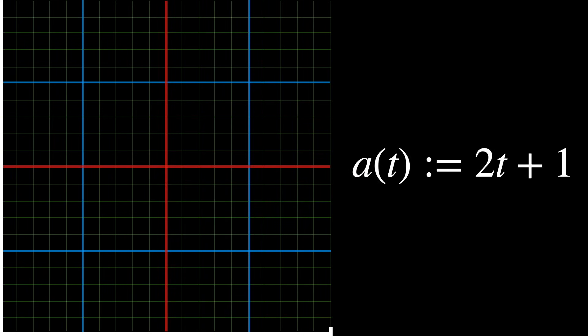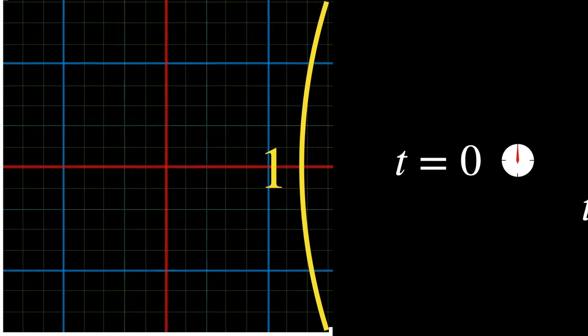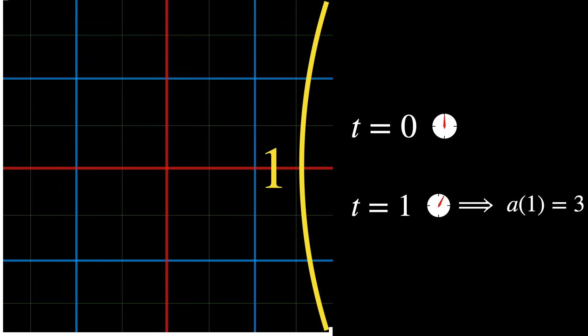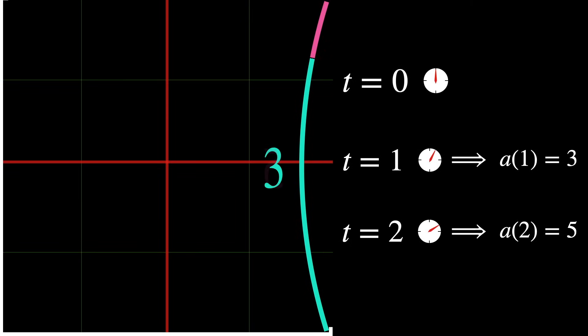In order to make the example more concrete, let's define a linear scale factor explicitly. This means that at time t equals 0, the square has side length 1. At time t equals 1, A of 1 is 3. So, all distances are tripled. At t equals 2, A of 2 is 5. And so, all distances are 5 times longer than at the beginning. And so on. This universe is expanding at constant speed.